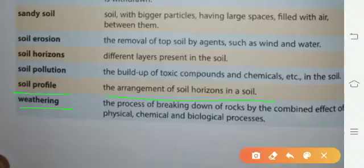Weathering: the process of breaking down of rocks by the combined effect of physical, chemical and biological processes. weathering کیا ہوتا ہے وہ process اس میں rocks جو ہیں وہ breaking down ہو جاتی ہیں ٹوٹ جاتی ہیں by the combined effect of physical, chemical and biological processes.